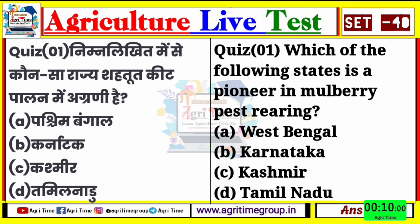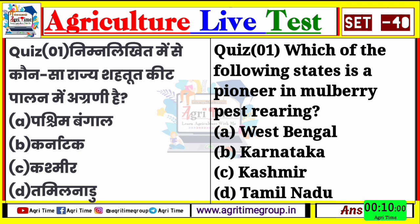Quiz number one का right answer होगा option number B, यानि कि कर्नाटक। जहाँ पे जो सहतूत कीट है, इसके पालन में जो कर्नाटक राज्य है, ये अग्रणी है हमारे India में।